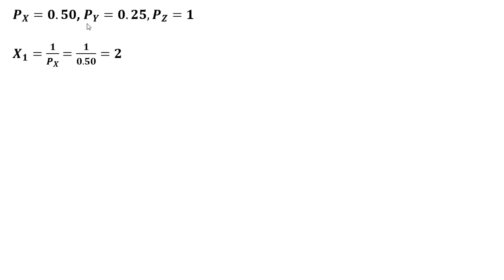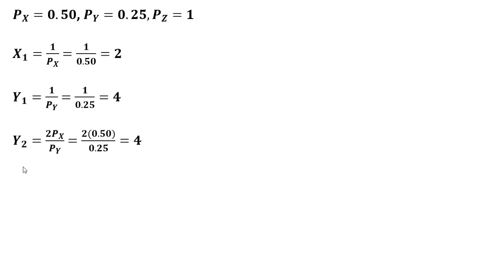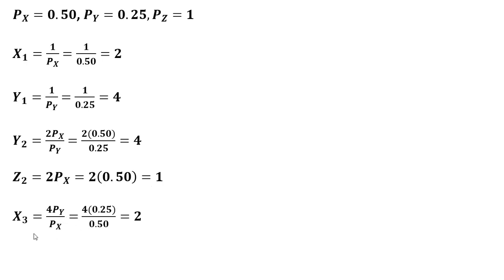Now let's evaluate all individual demands at these Walrasian prices. Consumer one will get 2 units of good x and 4 units of good y — just 1 divided by the price of good y. Consumer two will enjoy 4 units of good y and 1 unit of good z after substituting in the prices. Consumer three will enjoy 2 units of good x and 1 unit of good z.